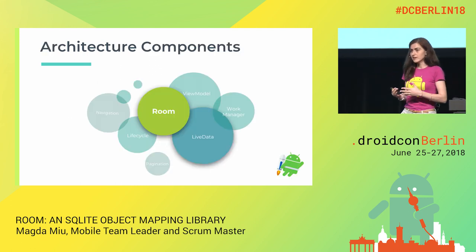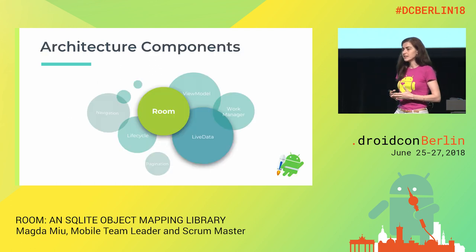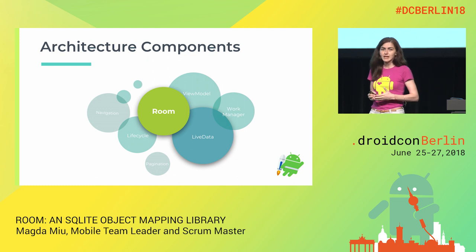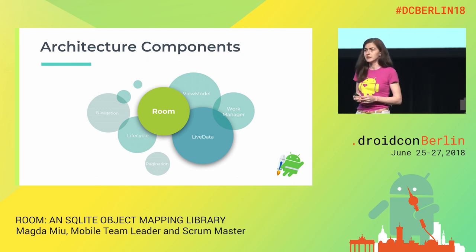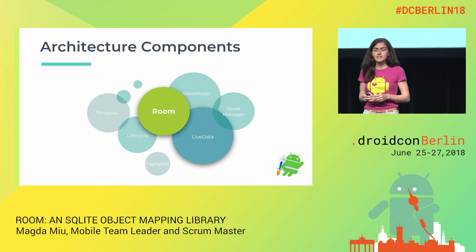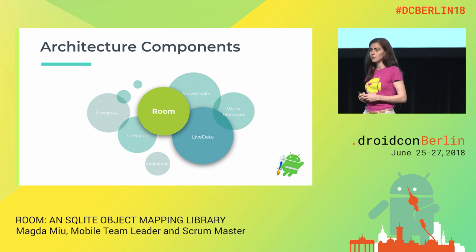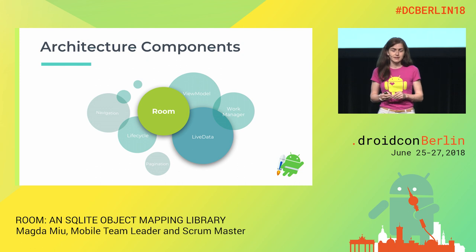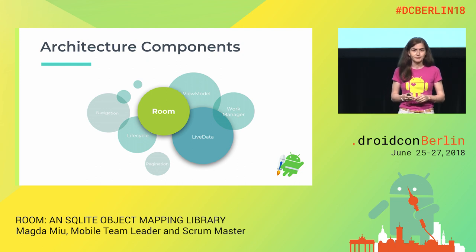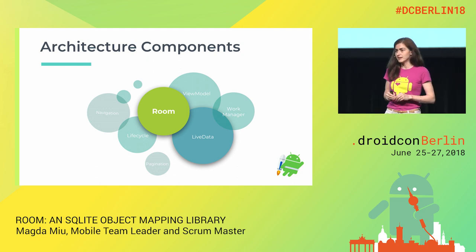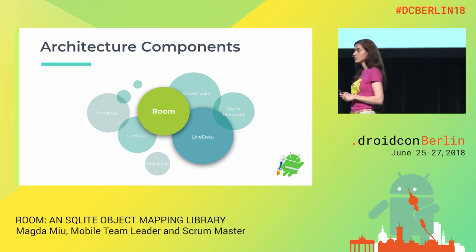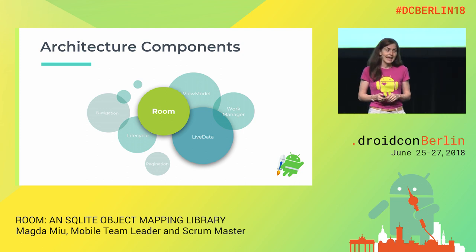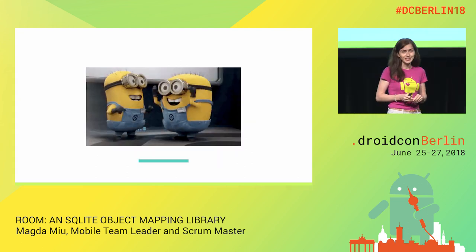As an answer to these things that should be improved in Android development, at Google I/O 2017, Google launched architecture components — a set of guidelines to help developers create better apps. At Google I/O this year, architecture components became part of Android Jetpack, and developers were happy again.